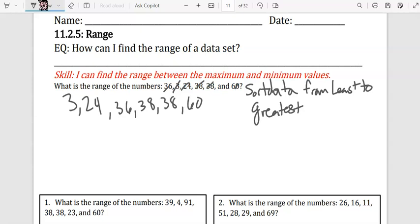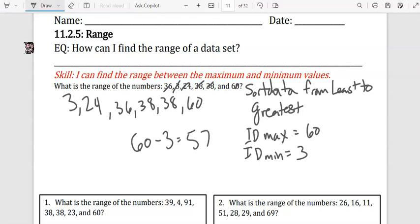You will identify the max and you will identify the min. In this case, the max is 60 and the min is 3. So 60 minus 3 equals 57. Your range is 57.